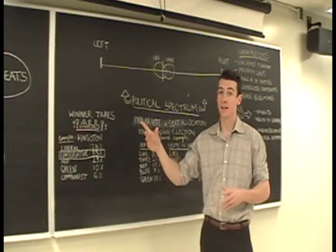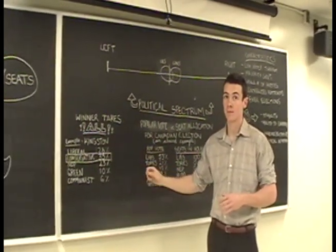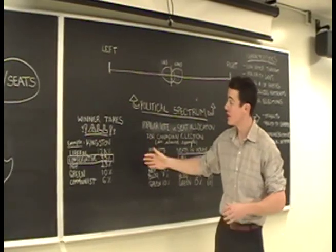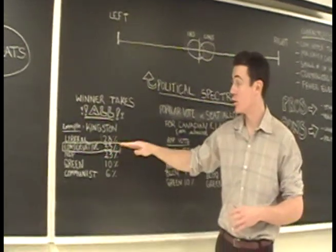So, in each one of those 308 contested ridings, only one person is going to win from each one. Let's take the example of Kingston right here where we have a liberal representative, a conservative, NDP, Green, and communist representative running.